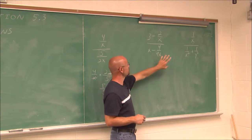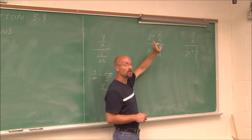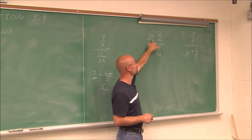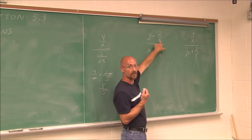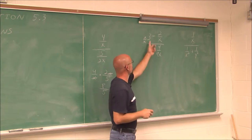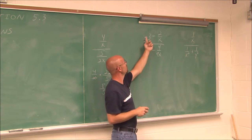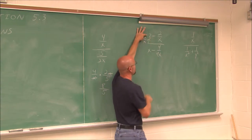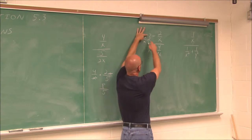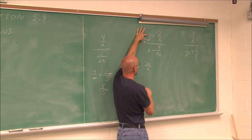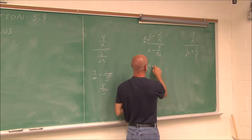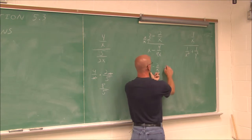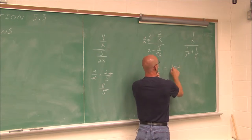Now if we look at this next example using method 1, we want to combine the top to a single fraction. The numerator has two terms, so we need to find the common denominator, which is x. To give this a common denominator of x, I multiply by x over x — essentially just 1, so I'm not changing its value. I can always think of any constant as being over 1, so 3 over 1. This gives 3x over x, minus 2 over x. Now that they have a common denominator, I can write it as (3x minus 2) over x.